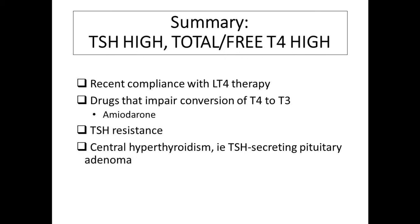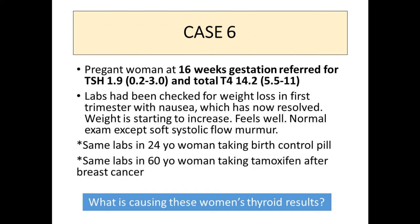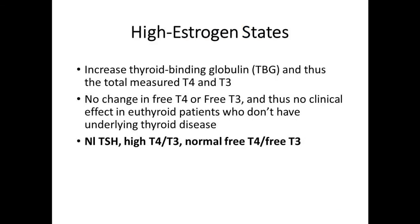Case six: a pregnant woman at 16 weeks referred because her TSH is 1.9 — which is normal — but a full panel was checked and she has a high total T4. They were looking for hyperthyroidism because she was losing more weight than expected in the first trimester, but her TSH isn't abnormal. This is just estrogen effect — this happens in every pregnant woman. I get this a lot from OBGYNs who check the full panel without being aware of this effect. High estrogen states also apply to people on oral contraceptives — just don't check the total T4 if you already know why it's high.